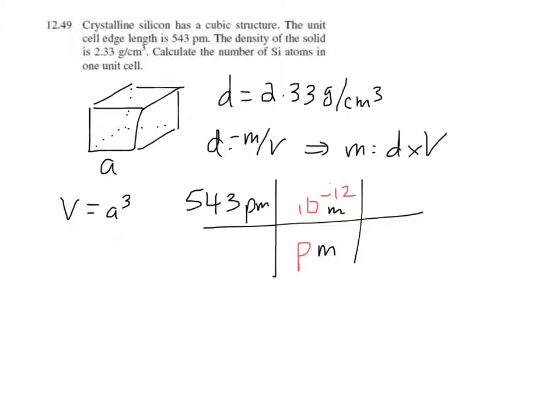And look at our units, they're canceling out here and here. And we want to get in centimeters. And so what do we know? We know centi means 10 to the minus 2. And so centimeters, just 10 to the minus 2 of a meter. And if we look at our units, they cancel and we're left with centimeters.